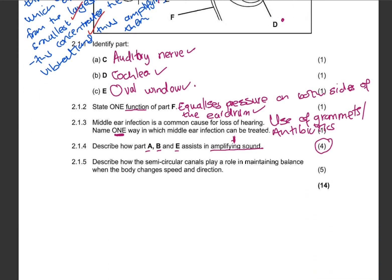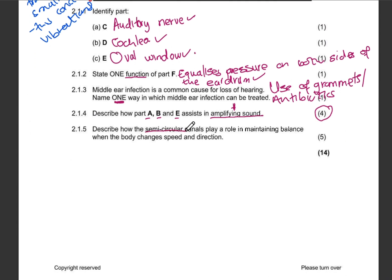For five marks, describe how the semi-circular canals play a role in maintaining balance. We are not avoiding those five marks. When the body changes speed and direction, we talk about maintaining balance. A change in speed and direction is going to stimulate the cristae, which convert the stimulus into an impulse. That impulse is then transmitted to the cerebellum via the auditory nerve, and the cerebellum sends impulses to the skeletal muscles to restore balance.